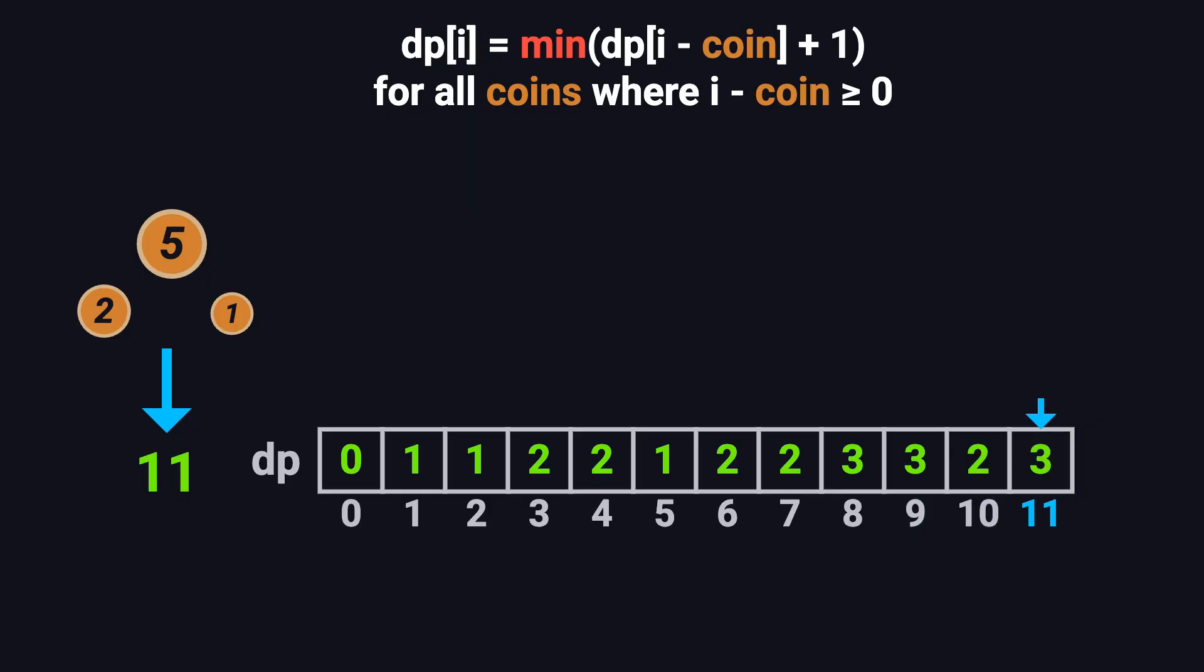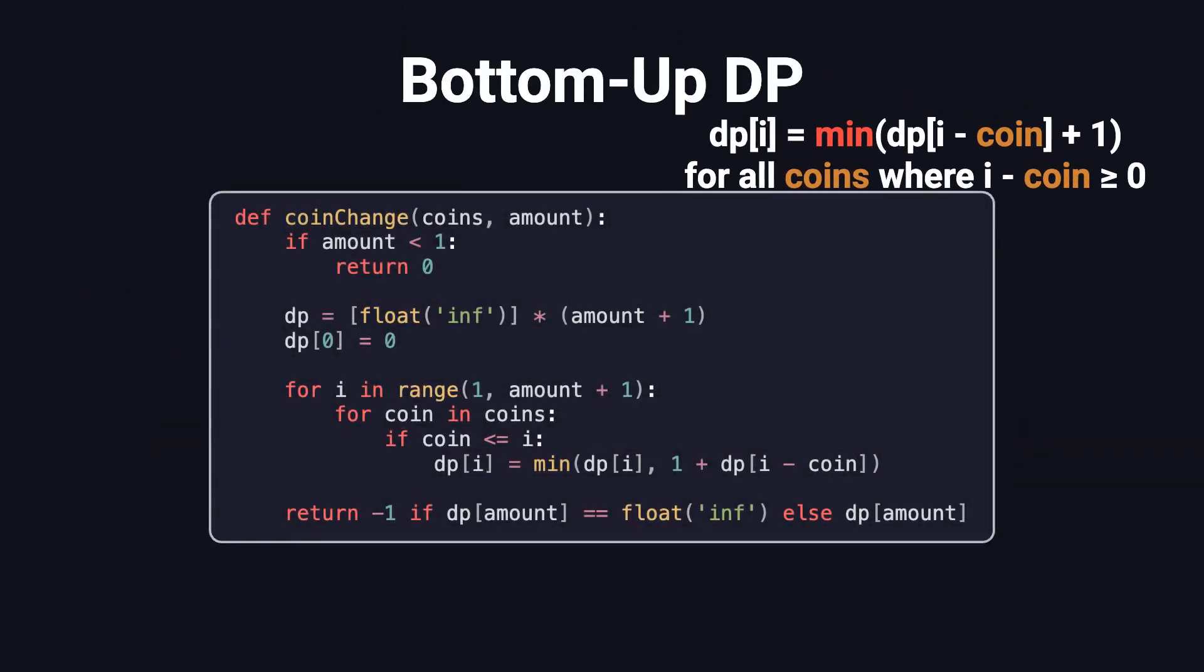Eventually, we reach dp[11], and we find it equals 3, meaning the minimum number of coins to make 11 is 3. Now that we have the logic, here's how we can translate that into Python code.